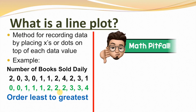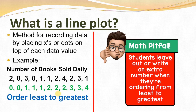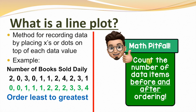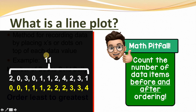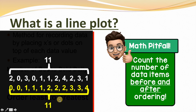I want to make sure you don't fall for this common math pitfall. Whenever students are ordering numbers from least to greatest, they tend to leave out a number or write an extra number. You need to make sure you're very careful. In order to make sure this doesn't happen, we should always count the number of data items before and after ordering them. Before we ordered our data, we had 11 data items, so after ordering we should also have 11. Let's check — this also has 11 items, so that means we didn't leave anything out and we didn't repeat a number.